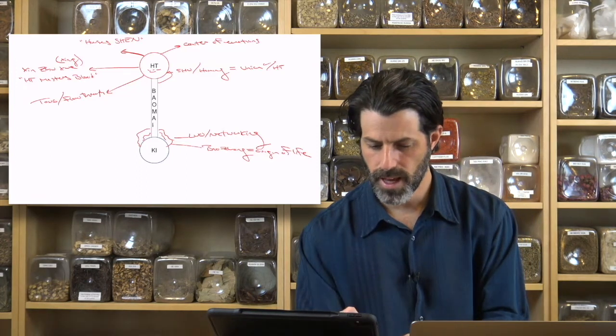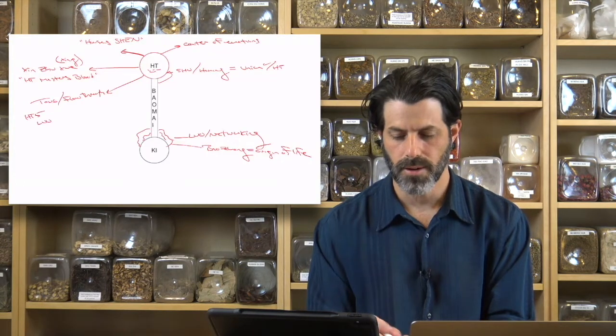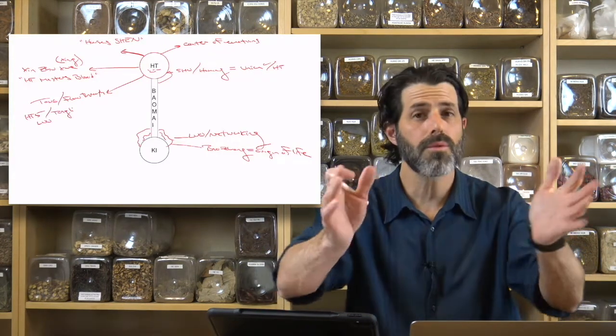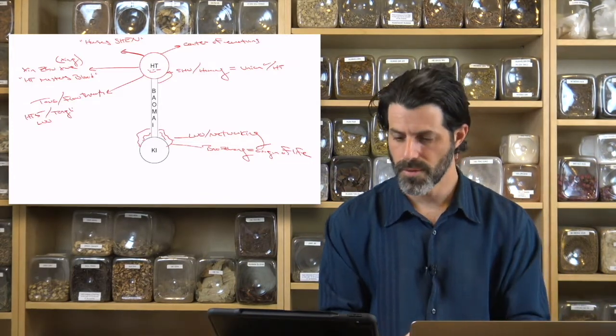Heart 5, which is the Luo point on the heart channel, means to penetrate, to flow through the inside. That's the same Tong.